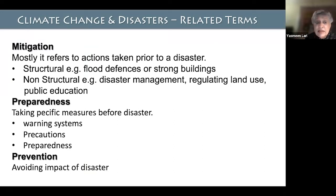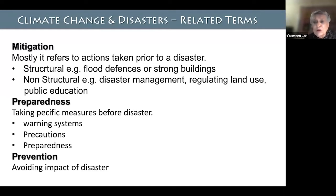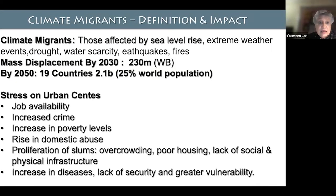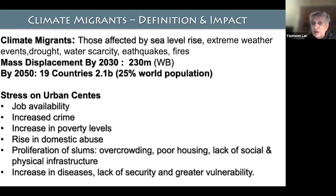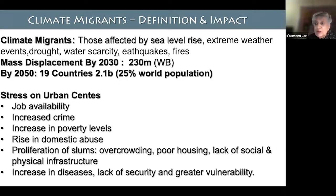Mitigation can be structural — flood defenses or strong buildings — or non-structural, like disaster management, regulation, and public education. Preparedness includes warning systems and precautions. Of course, the largest issue is climate change impact, and we all have to work towards that elusive figure of 1.5 degrees centigrade. Climate migrants are those affected by sea level rise, extreme events, drought, water scarcity, earthquakes, and fires. By 2030, 230 million people are expected to be displaced.